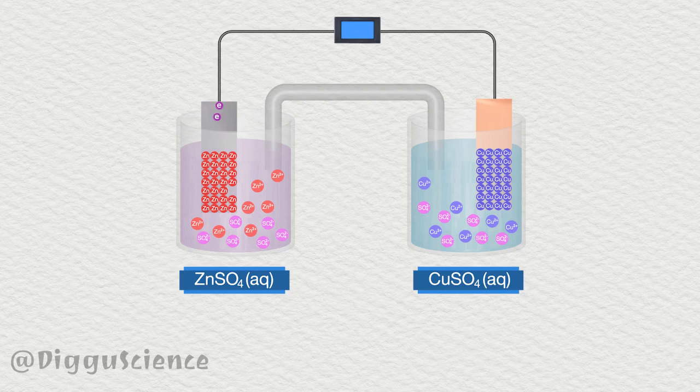During this process, the zinc sulfate solution will have an excess of positive ions. Meanwhile, the copper sulfate solution will lack positive ions.